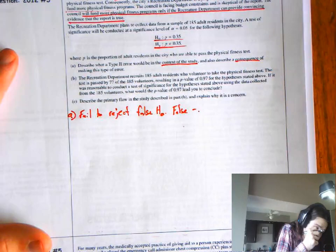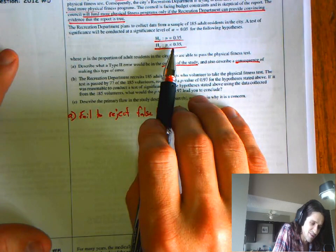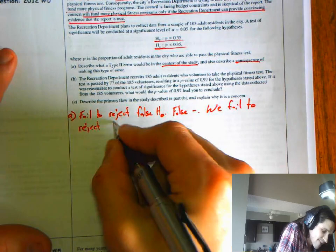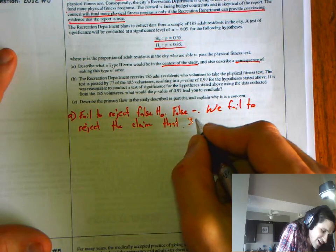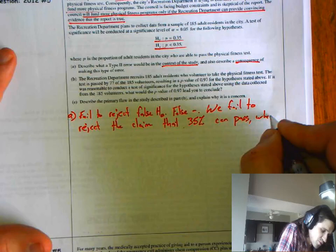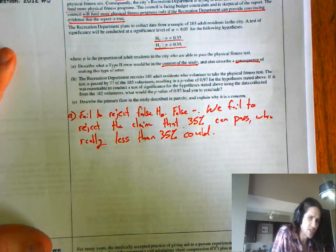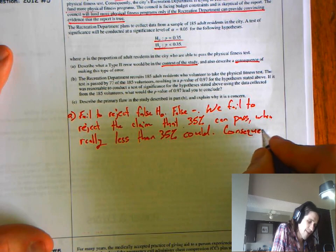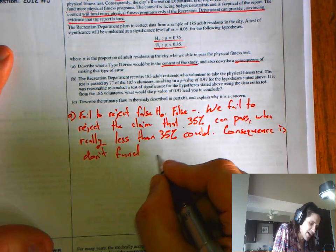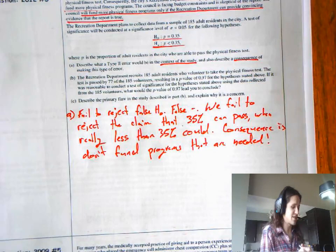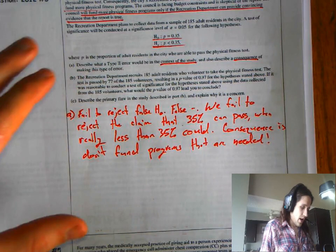This is just going to help you remember it. What does this mean? It means if the null is false, that means that really less than 35% of the people can pass it. But we say that 35% can. We fail to reject the claim that 35% can pass when really less than 35% could. What's the consequence? The consequence is that we don't fund programs that are needed.